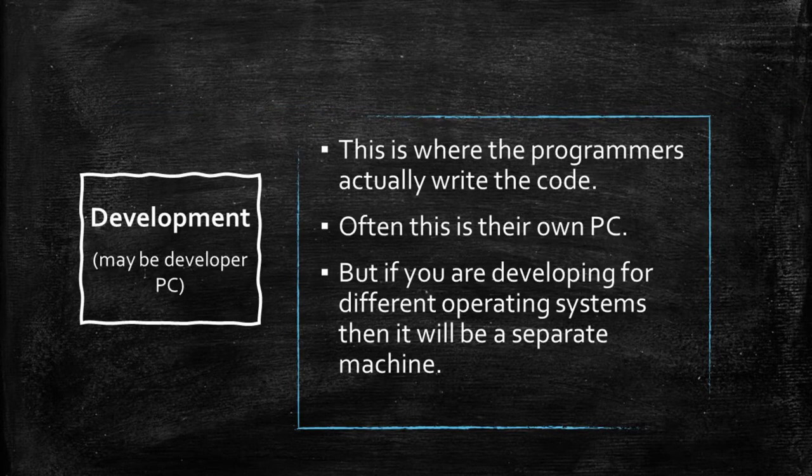First: development. This may often be the programmer's personal PC, but equally, if you're going to run the system itself on a different operating system than the programmer runs on their PC, you will need a separate machine.